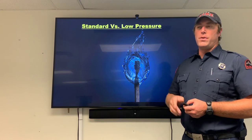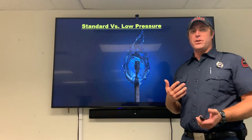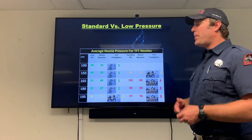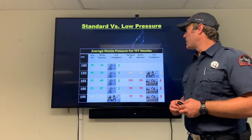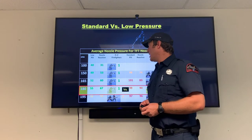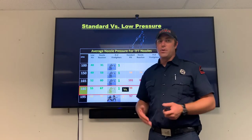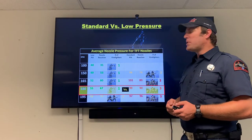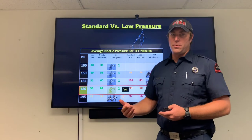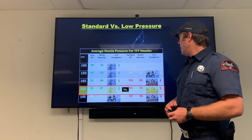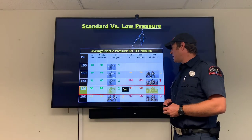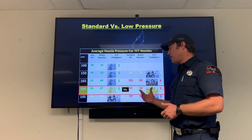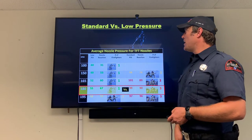Looking at the difference between standard and low pressure: this was the slide used in 2016 during the major emphasis training to convince the department to go to low pressure. The biggest effect is nozzle reaction. At our target fire flow of 180 GPM in low pressure, we achieve that with 67 pounds of nozzle reaction — under the 70-pound target, manageable for one firefighter. In standard pressure, to get the same flow we'd need 100 PSI at the nozzle, giving 90 pounds of nozzle reaction. We've essentially taken a one-firefighter line and turned it into an almost three-firefighter line.